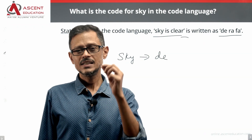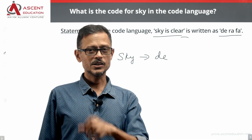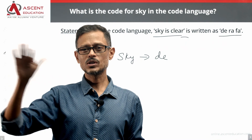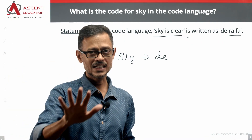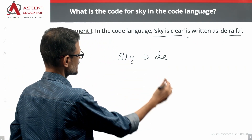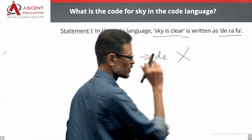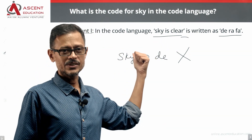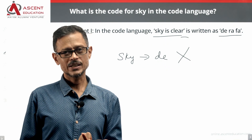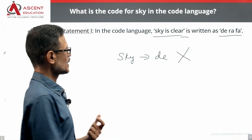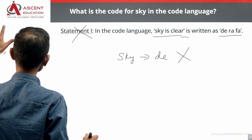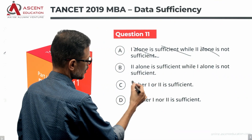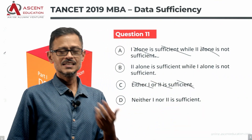It could be in a different order too. From statement 1 alone, the code for sky is not unique. So statement 1 is not sufficient — we can eliminate answer option A. Also, either 1 or 2 being sufficient is also not the case, so we eliminate that option as well.